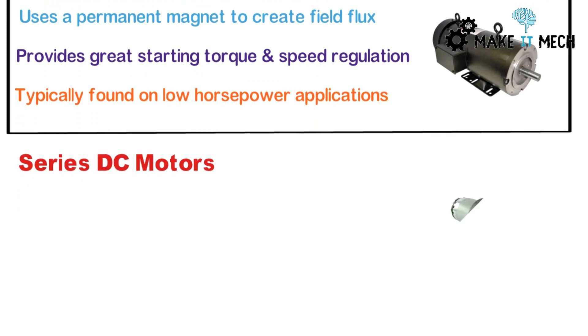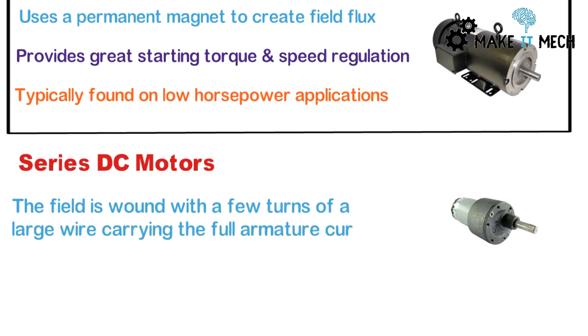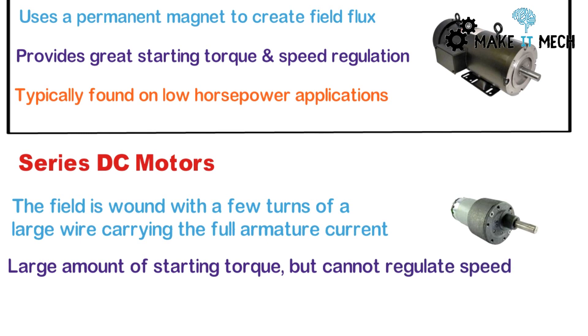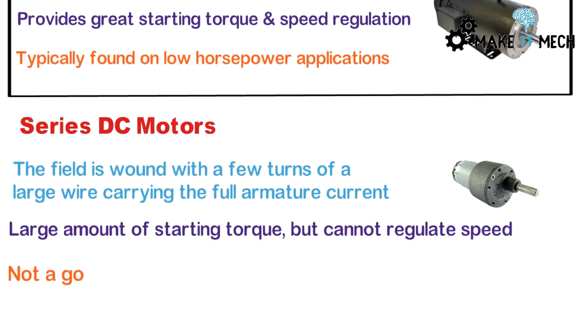Series DC motors carry a large amount of field current because of the internal structure of these motors. The armature coil is wound with few turns of large wire. These motors have a large amount of starting torque but do not have very good speed regulation. These type of motors are not suitable for variable DC speed drive applications.